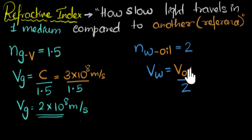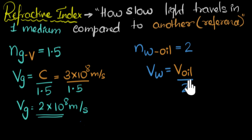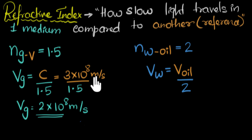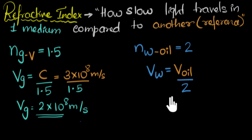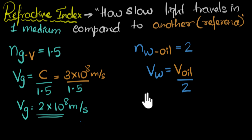Since I don't know what the speed of light in oil is — I don't even know which oil we're talking about — I can't substitute. If I knew it, I could substitute just like before and get the answer, but I don't know it, so I'm not going to substitute. And that's pretty much it — that's what refractive index is all about.